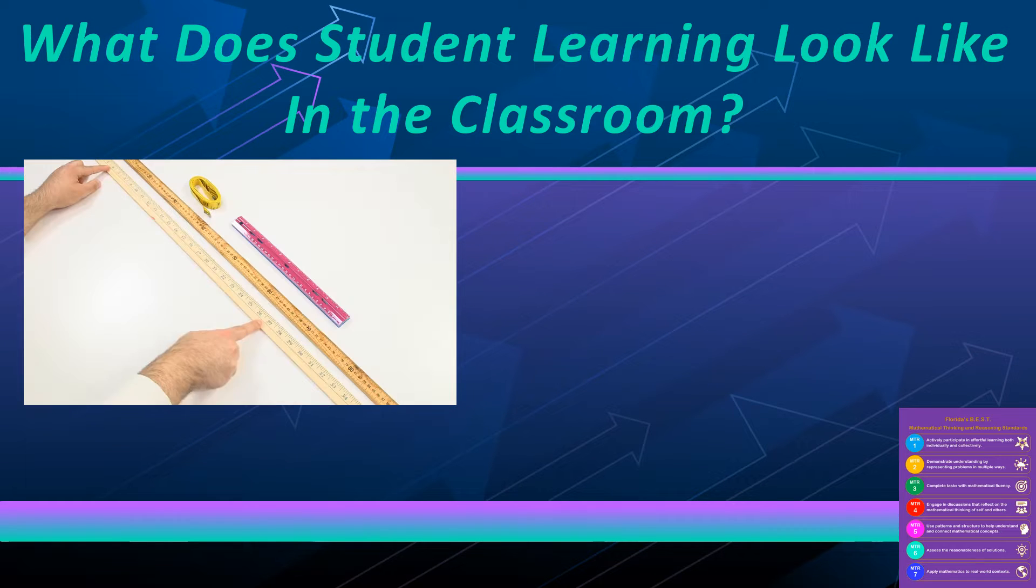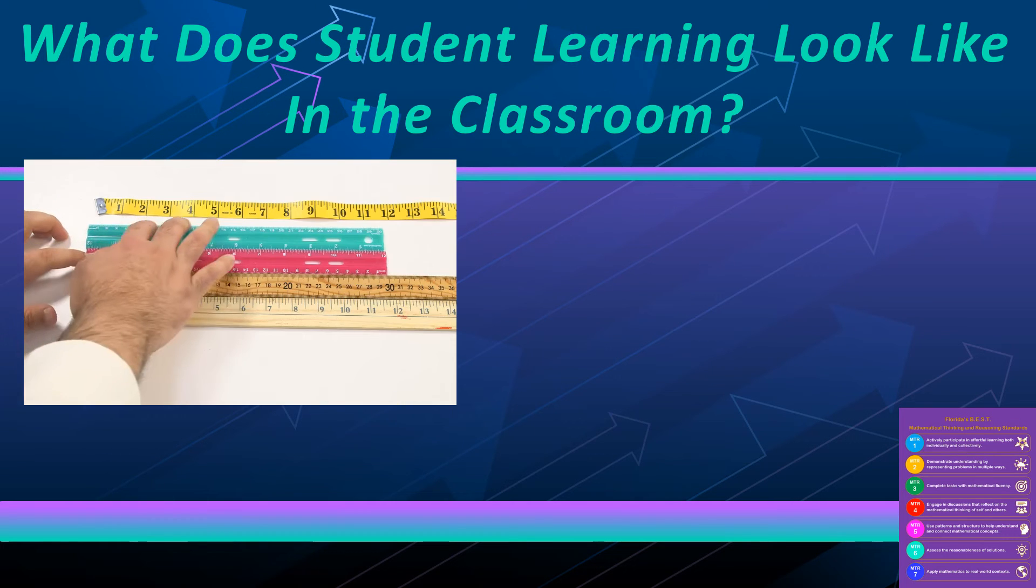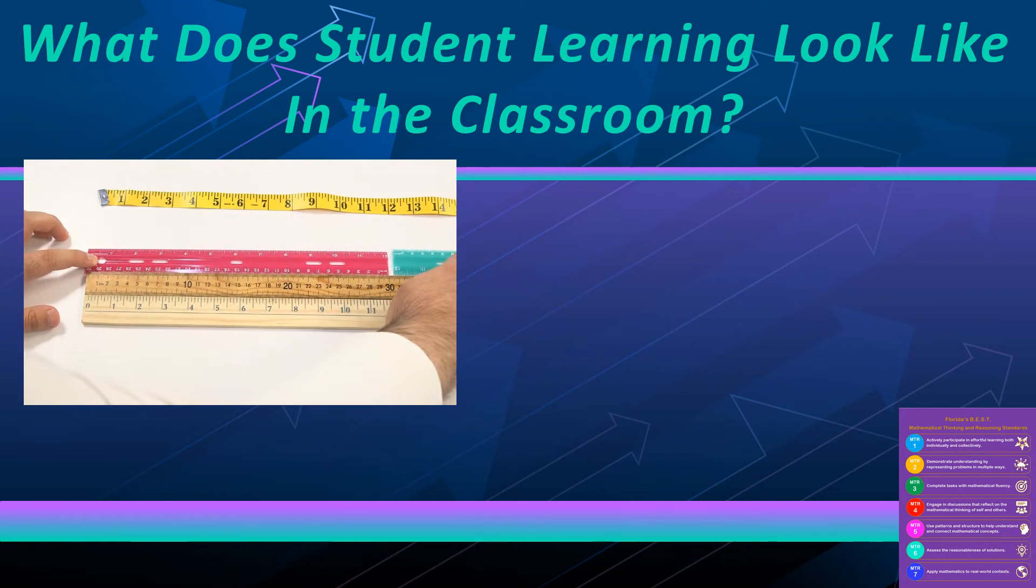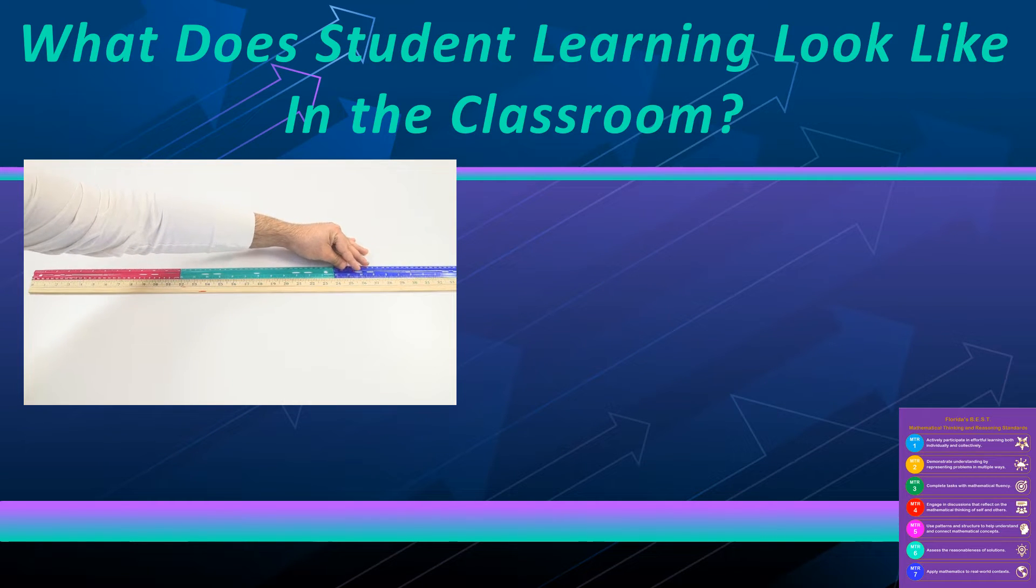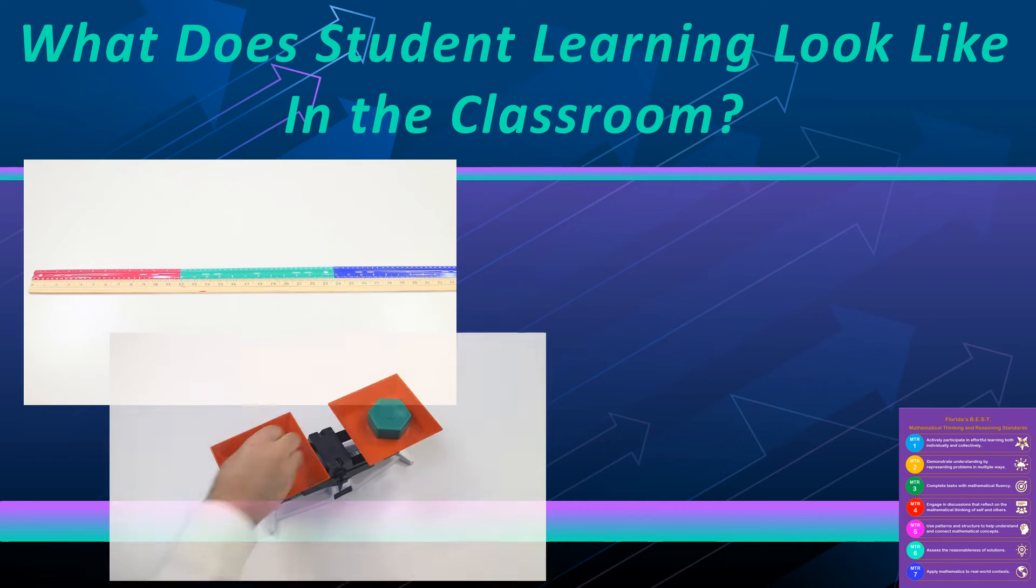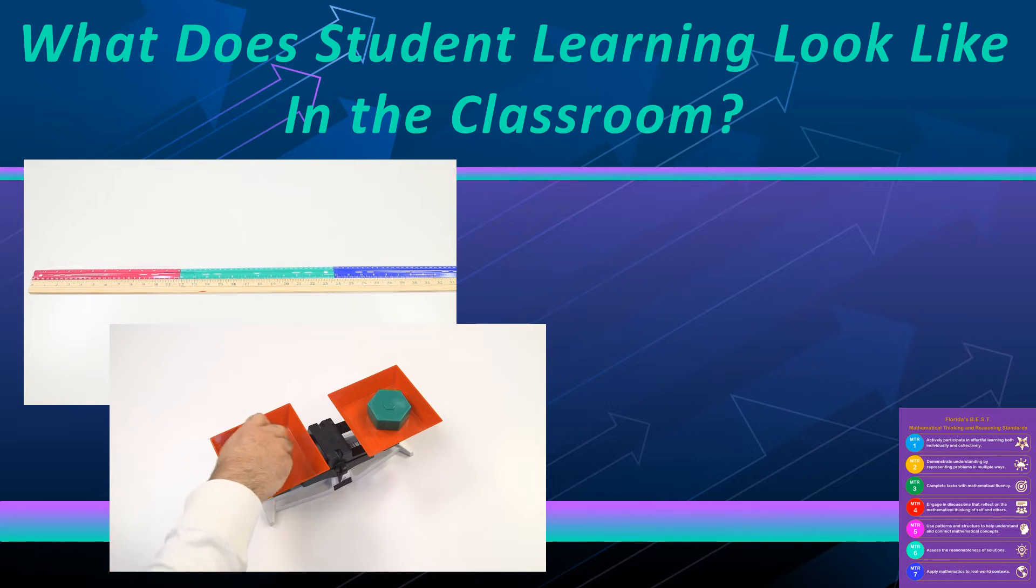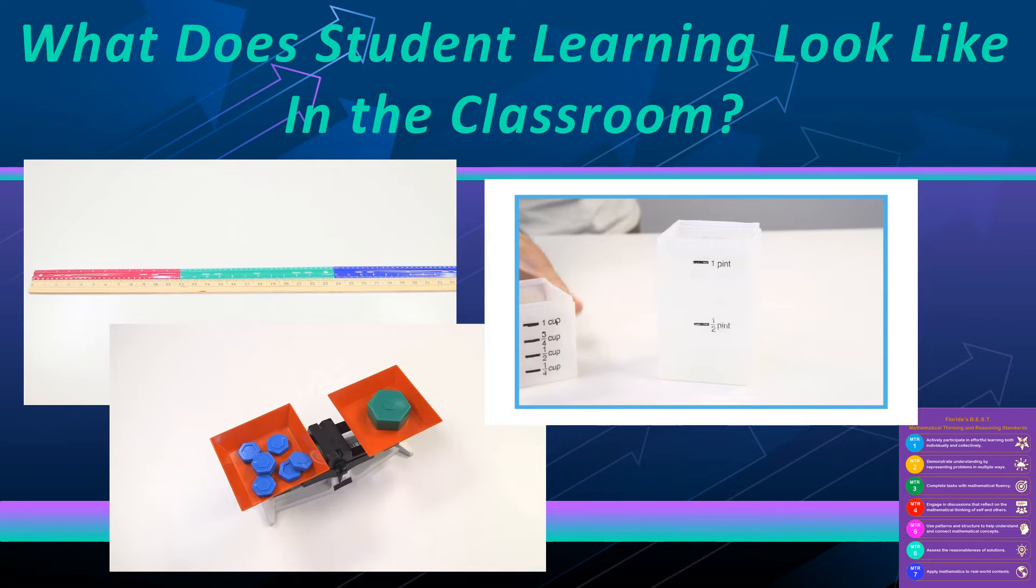So what does student learning look like in the classroom? In this unit, we should see a lot of hands-on experiences happening. We should see students using measurement tools, selecting which tool to use for a specific measurement situation, actually using those tools to convert like you see on the screen now where three feet equal one yard, actually getting out those hands-on weights so that they convert one gram to milligrams or whatever other units they're using. But once again, making it a very hands-on experience.